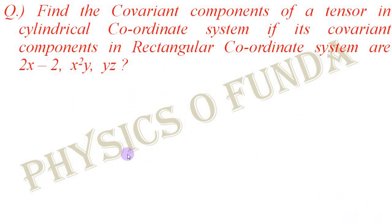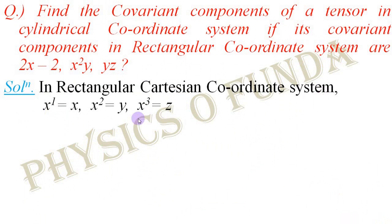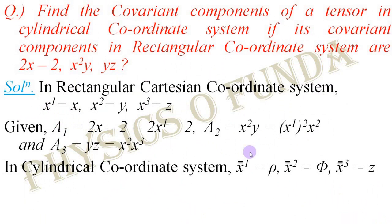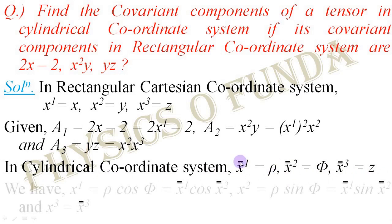Now we consider the final problem of today's video. Find the covariant components of a tensor in the cylindrical coordinate system if its covariant components in the rectangular coordinate system are given as 2x, minus 2x square y, and yz respectively. We consider the rectangular Cartesian coordinate system as the unbarred coordinate system, and the cylindrical coordinate system as the barred coordinate system, where rho is x1-bar, phi is x2-bar, and z is x3-bar. The relationship between rectangular and cylindrical coordinates is then rewritten accordingly.